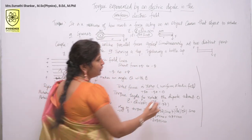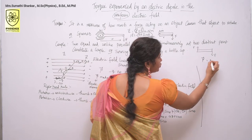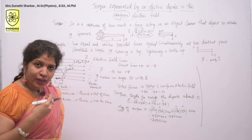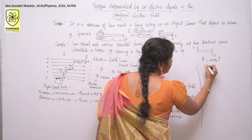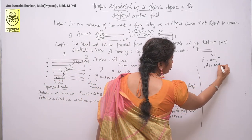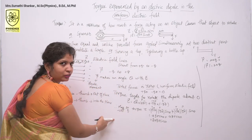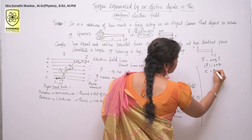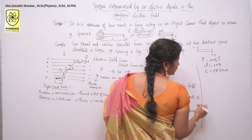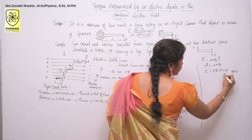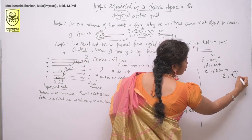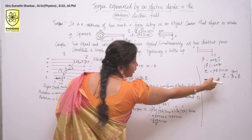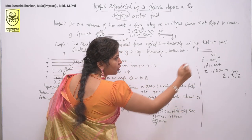You know that the dipole moment vector can be written as 2AQ (where I is the unit vector). The magnitude P equals 2AQ. So instead of 2AQ in the expression, you can write P. Therefore, tau is equal to PE sin theta, or in vector form, tau vector equals P vector cross E vector.